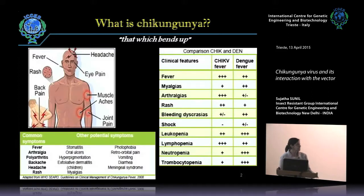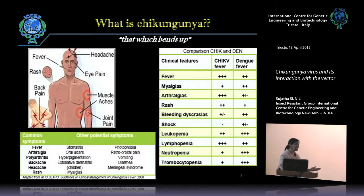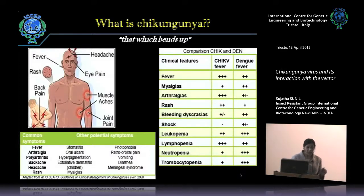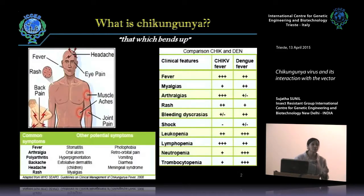While dengue is associated with mortality and a complicated phase, chikungunya is self-limiting, because of which it is mostly underrepresented and underdiagnosed. There is also better diagnostic capability for dengue — you can detect it on day one of clinical onset — whereas for chikungunya you have to depend on antibodies which come much later. Furthermore, these two viruses exist as co-infections in the host, which makes patient management more complex.